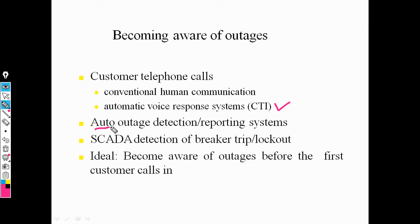The automated outage management system easily detects customer data and reports it to the utility center. The outage management system is a computer-based system that uses SCADA. SCADA easily detects circuit breaker trips — automatically or manually. Being aware of the outage, the first customer call is very important because customers face many problems, and that first call is critical for the utility center to provide service.